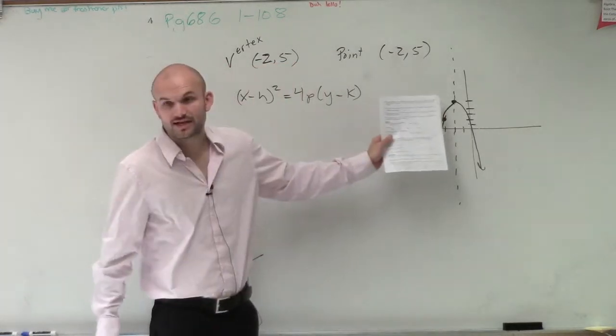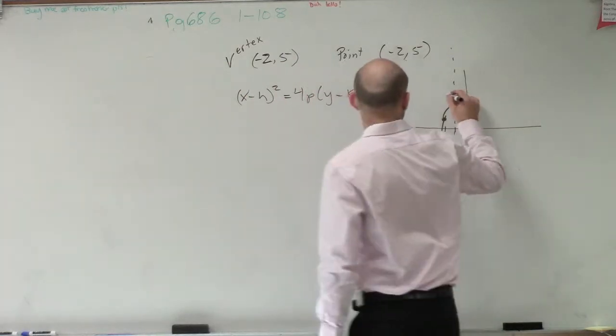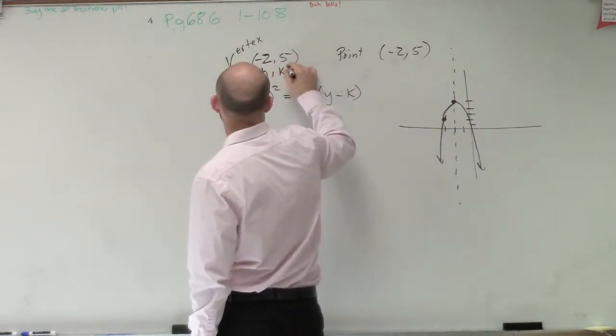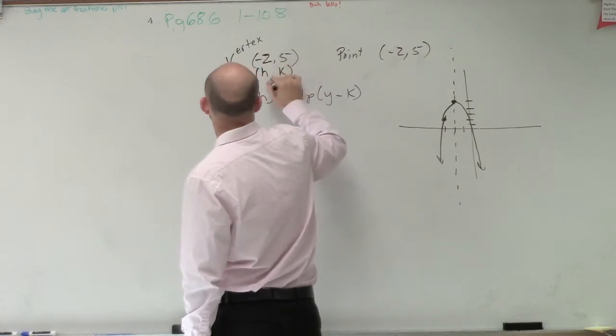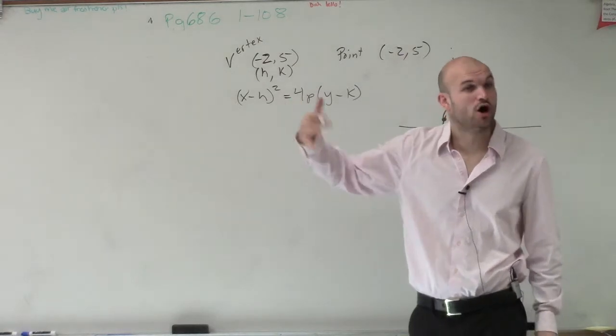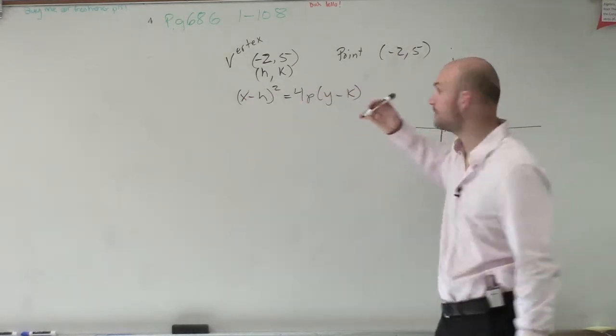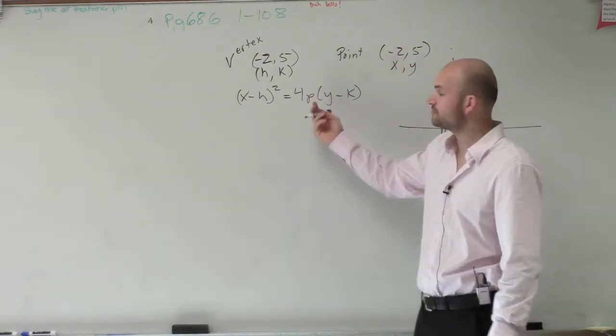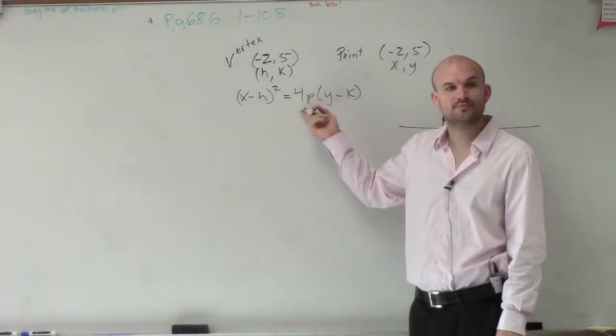So now, we know what the vertex is. So remember, the vertex is negative 2, 5. Well, that represents our h and our k. And remember, any given point, if an equation represents all the points on a parabola, if we're given one point, we can represent that as our x and our y. But to write the equation, we need to figure out what p is.